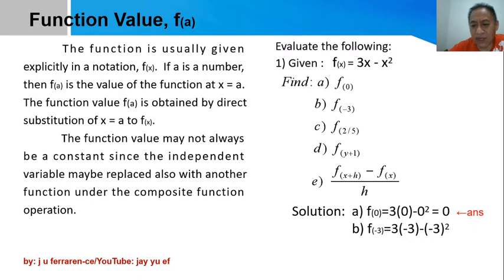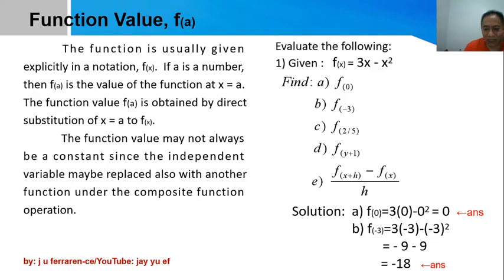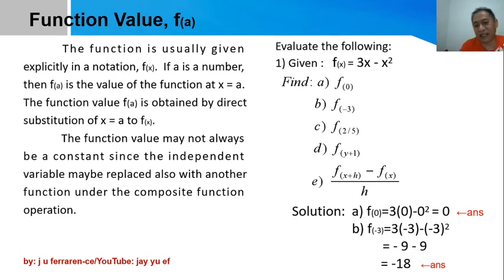For part b, the value of x is equal to -3. Substitute -3 into x: the first term is -9, and the second term is a negative of (-3) squared, which is -9. So we have -9 minus 9. The sum of two numbers with like sign — both negative — gives a result of -18.